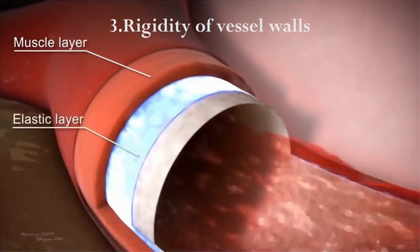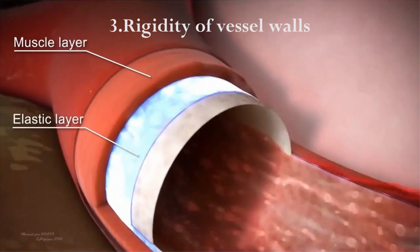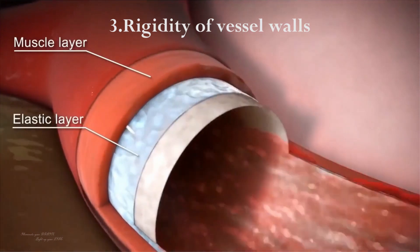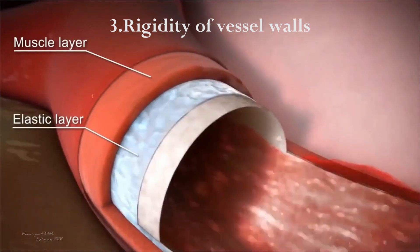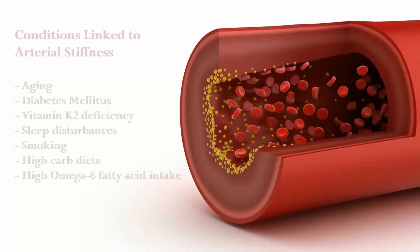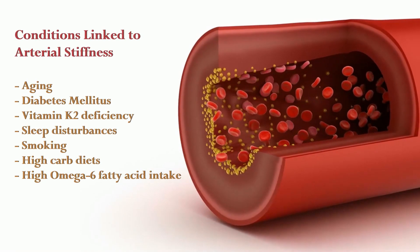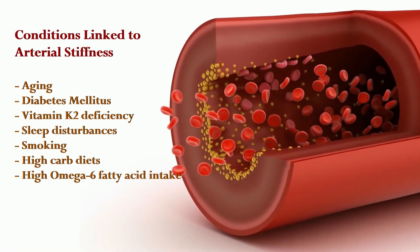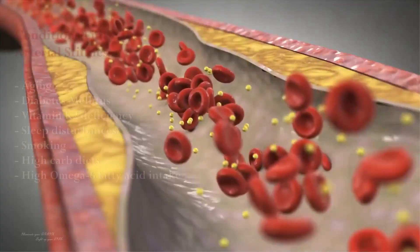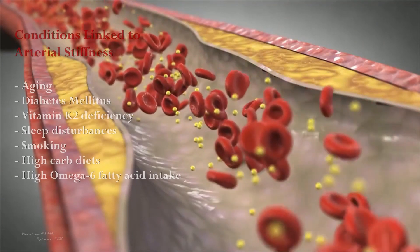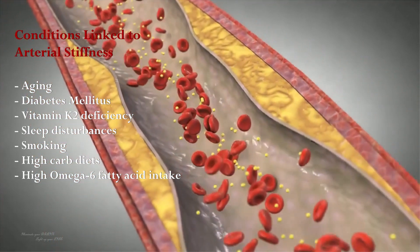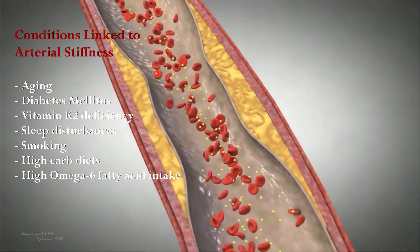The elasticity of vessel walls allows them to expand and contract in response to changes in blood volume and maintain optimal blood pressure levels. Loss of elasticity and increased stiffness of arterial walls can lead to hypertension.